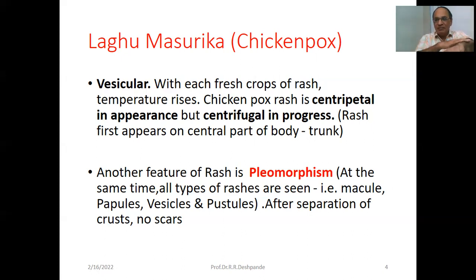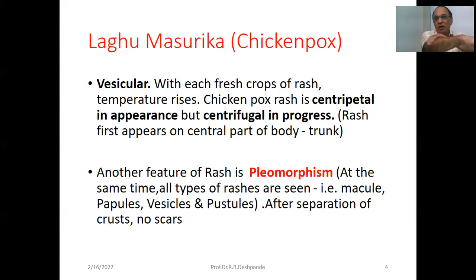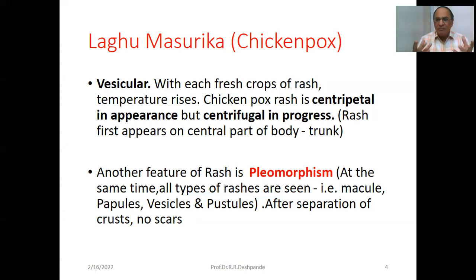Macule means at the level of the skin. Papule — the rash is slightly raised. When the papule is filled with fluid, that is vesicular rash. When the raised part is filled with pus, that is pustule. So four types together — macule, papule, vesicle, and pustule — can appear simultaneously in different areas of the body in chicken pox, which is called pleomorphism.